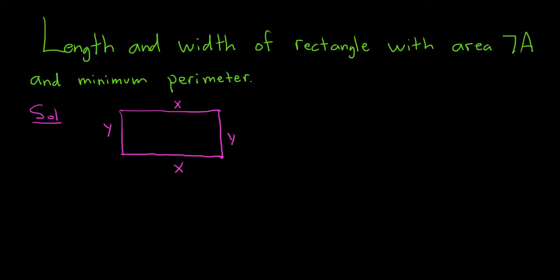We're told that the area is 7a, so that means x times y is equal to 7a, because the area of a rectangle is length times width. So x is the length, y is the width, and x times y equals 7a.